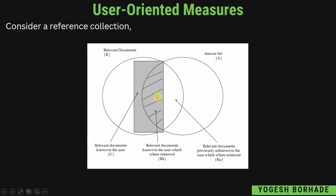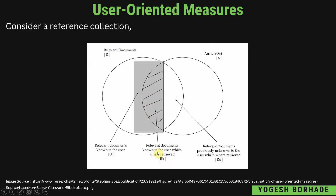Then we have a rectangle which denotes the relevant documents known to the user, denoted by mod of capital U. The white part of the relevant document set represents relevant documents previously unknown to the user but which were retrieved, denoted by R(u). The net part represents relevant documents known to the user, and the lined/shaded part represents relevant documents known to the user which were retrieved, denoted by mod of R(k).